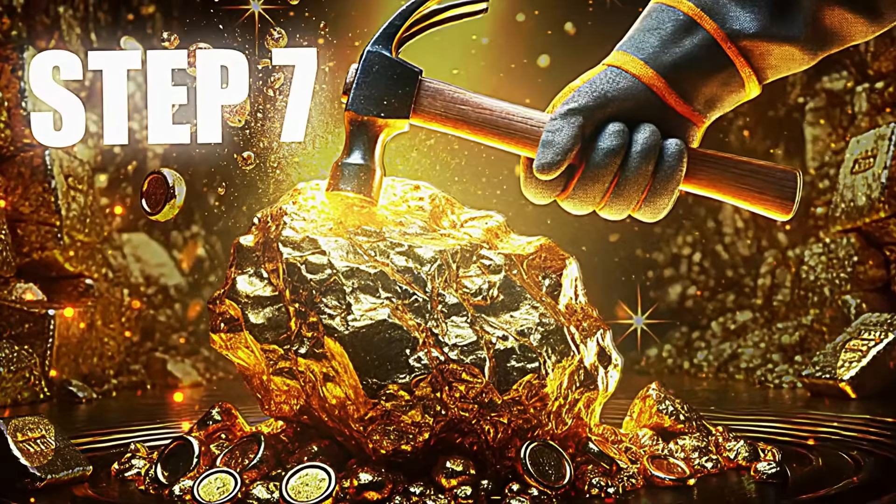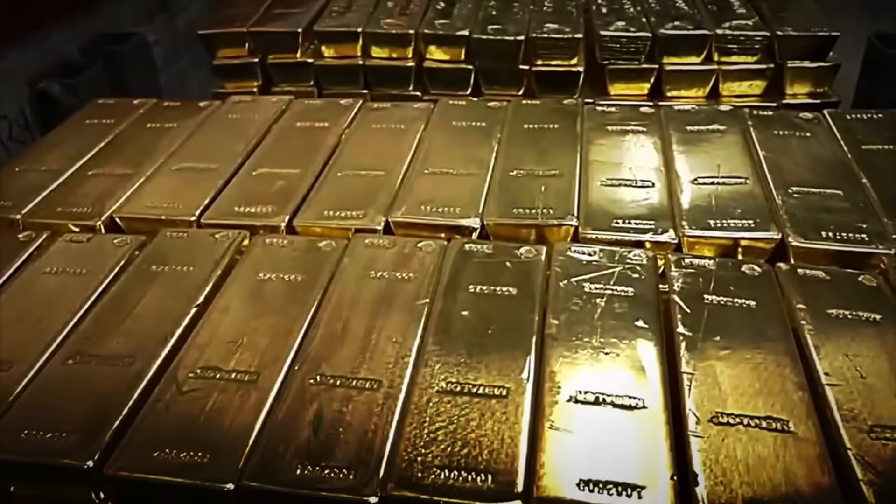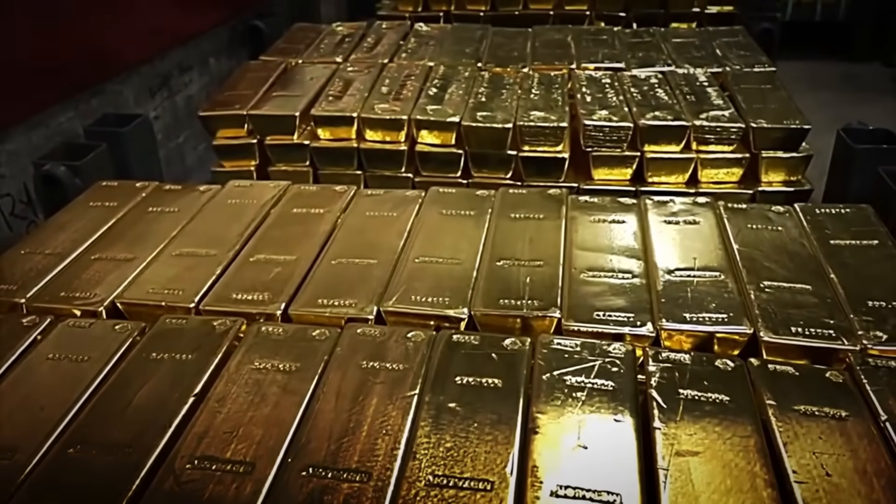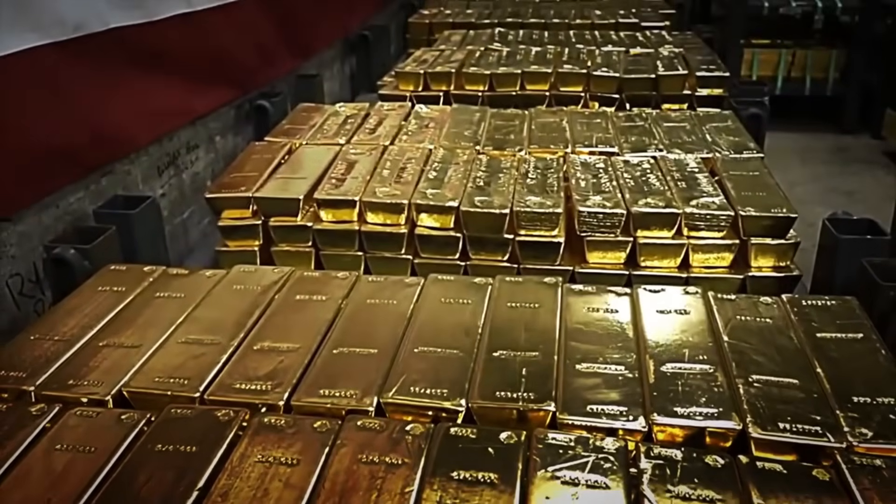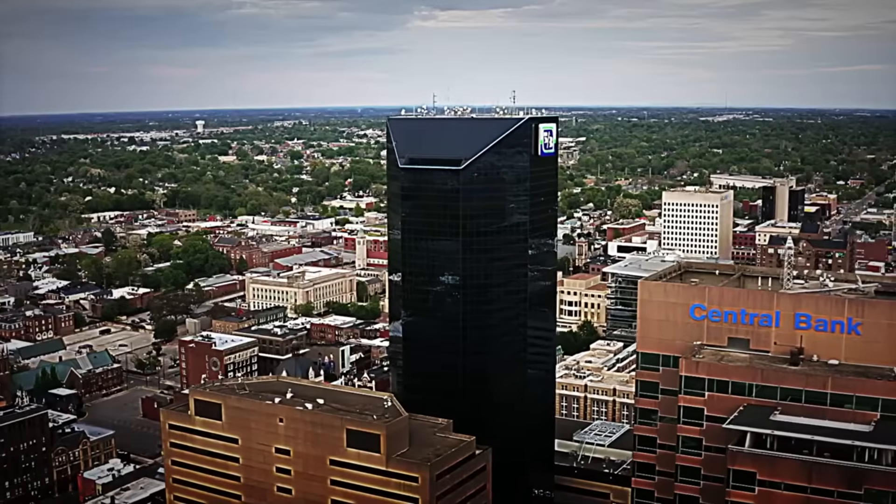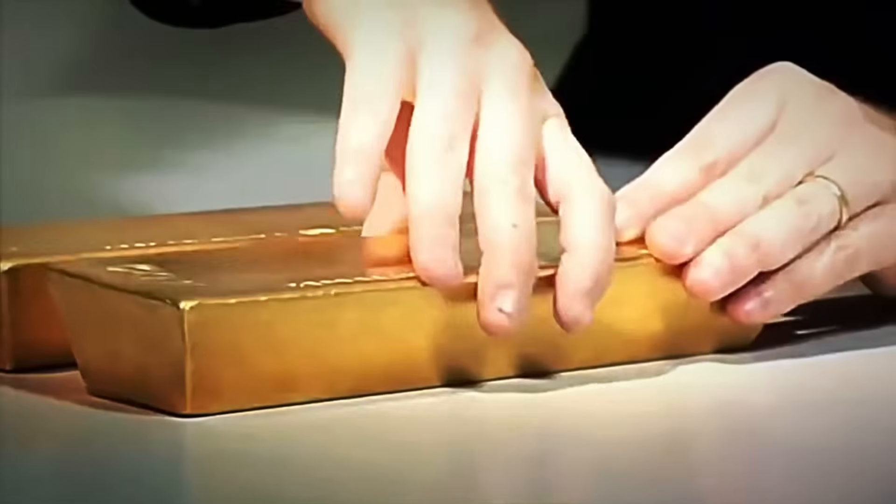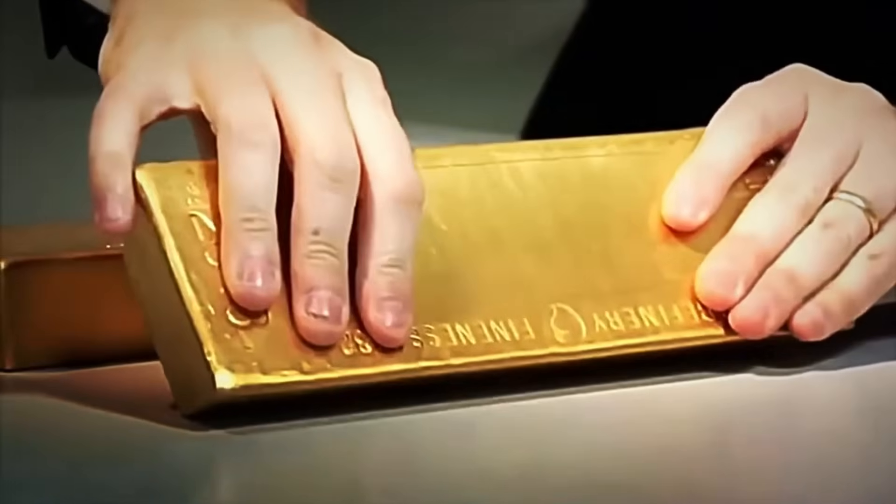Step number seven: Storage and Distribution. With the gold ingots ready, it's time to store them in high-security vaults. These ingots, now with an impressive value, are kept in extremely protected places, such as central banks or gold vaults in various parts of the world. These sites are fortresses that ensure the gold is completely safe from any threat.